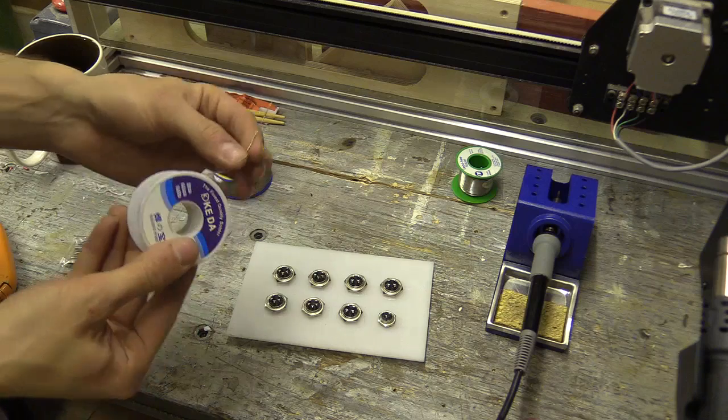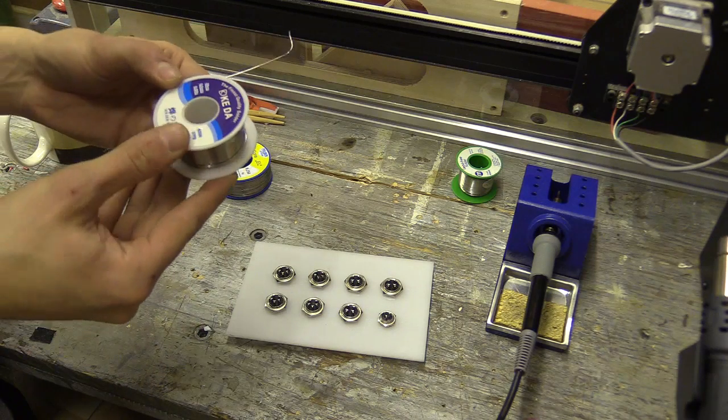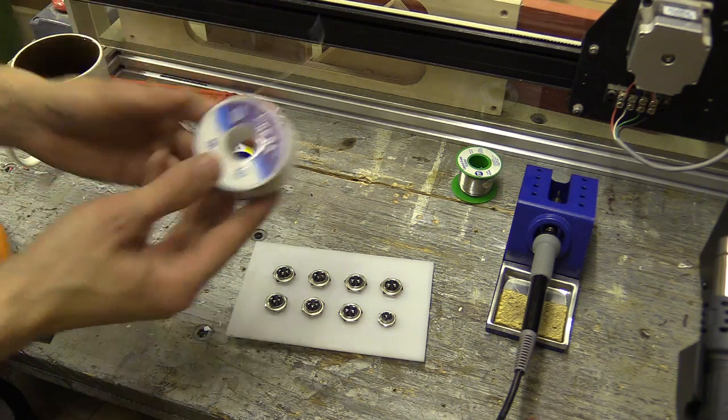With the soldering station I was sent, I also received a bit of solder. This stuff looks a bit better, it's thinner, 0.8mm, and it has some information on it compared to this one.